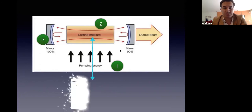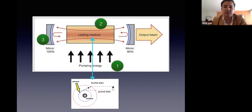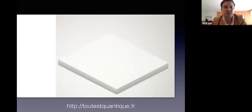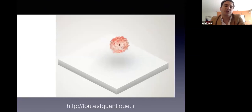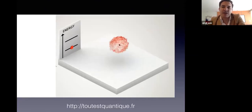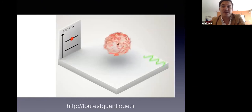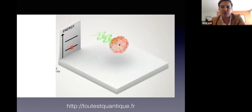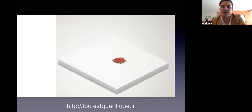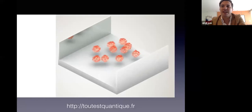In the lasing medium, photons from the pumping source change the state of atoms from a ground state to an excited state, ultimately releasing the output beam. In quantum physics, the energy of an atom displays discontinuous energy levels. If a photon with the proper energy is sent to an excited atom, the atom falls to a lower energy level and emits a second photon perfectly identical to the first.